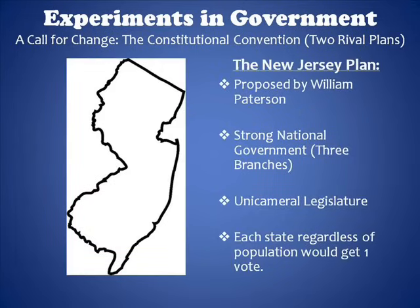In response to the Virginia Plan, the New Jersey Plan was created, proposed by William Paterson. He called for another strong national government with three branches, much like the Virginia Plan, but he wanted just a unicameral legislature, meaning only one house in the government. Each state, regardless of population, would only get one vote. This would make everything equal, keeping the bigger states from controlling the government. So, the Virginia Plan based representation on population, while the New Jersey Plan wanted representation to be equal.